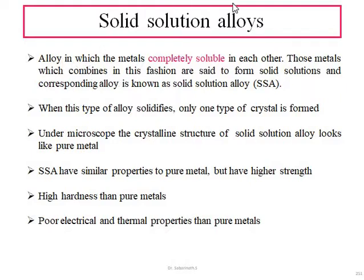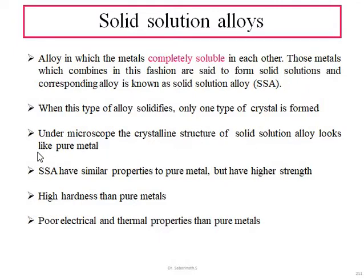Most alloys come under the category of solid solution. We take two different metals, merge them, and join them together — this is known as a solid solution alloy. The particularity is that when this type of alloy solidifies, we get only one type of crystals — one regular pattern of crystals is formed. Under a microscope, this crystalline structure looks like a pure material.